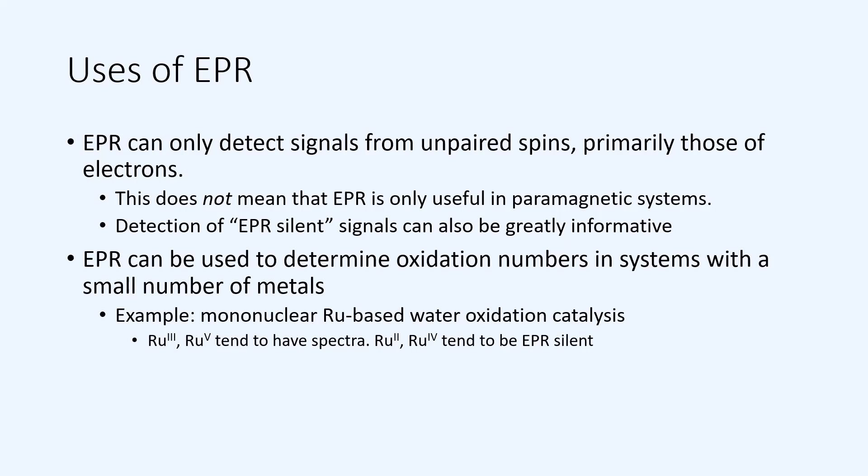Some examples of where EPR can be used could be using EPR to determine oxidation numbers of our metals. For example, if you have a transition metal, such as ruthenium, or in the simplest case, a mononuclear transition metal-based system, you could very easily identify, based on the number of free electrons, the number of valence electrons in this metal, what kind of oxidation number this metal might be in.